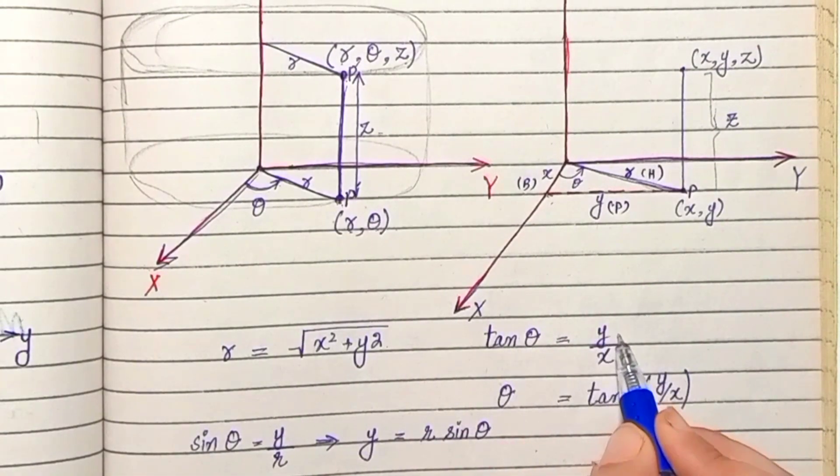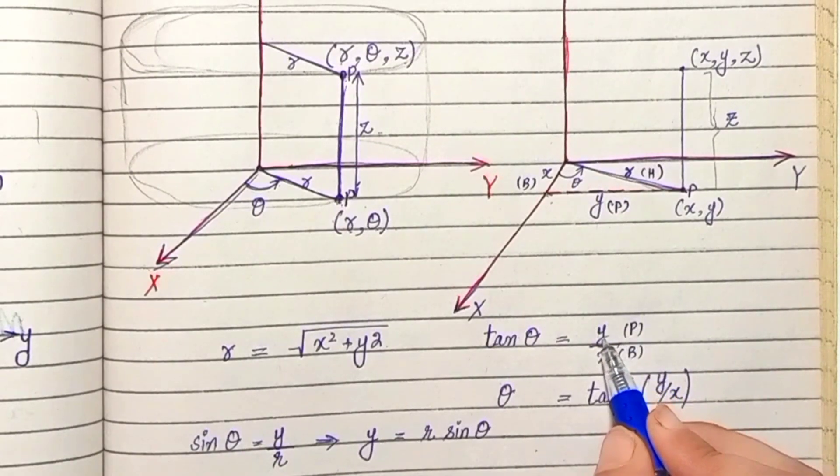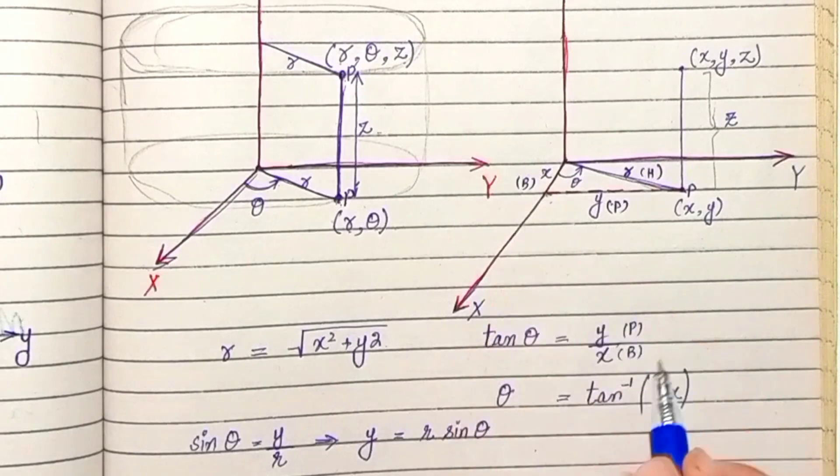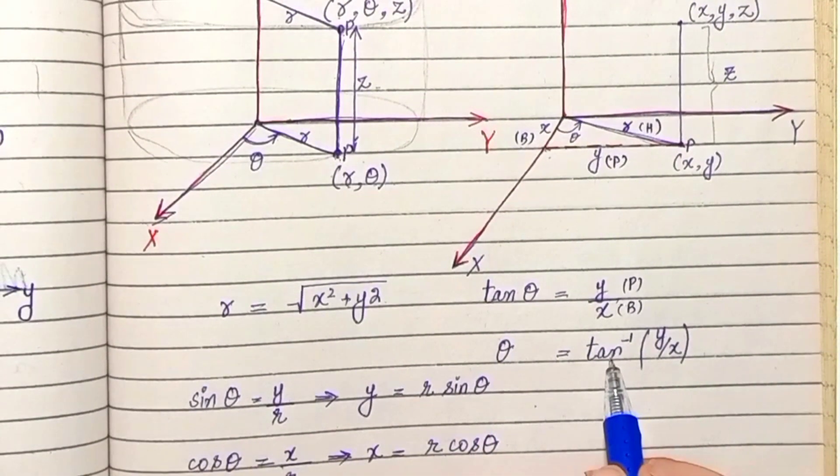tan theta barabar hota hai perpendicular by the base. y is the perpendicular and x is the base. Agar hum theta ko ek side pe chhod dein, tan inverse